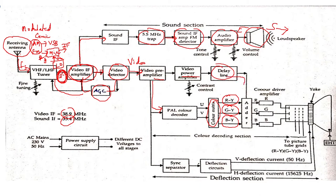When the color difference signals are combined with the luminance in an adder, information about the red, green, and blue signals is obtained. These are given to the respective red, green, and blue guns, which produce beams of red, green, and blue light. These beams are directed through the yoke of the picture tube, generating an electron beam that strikes the screen, where you see the picture formed by mixing these three primary colors.